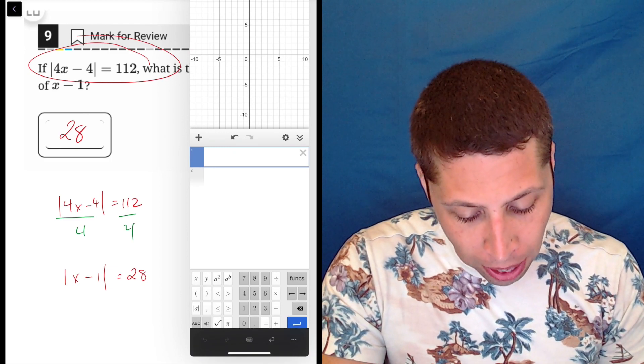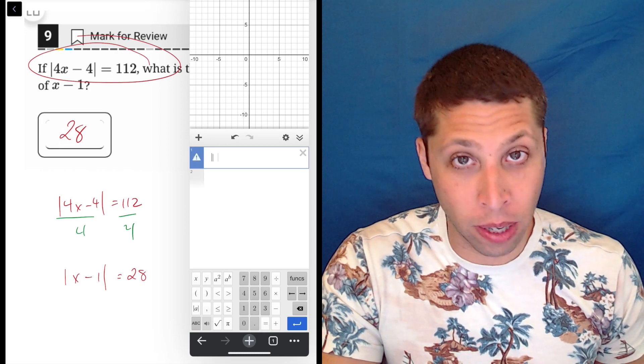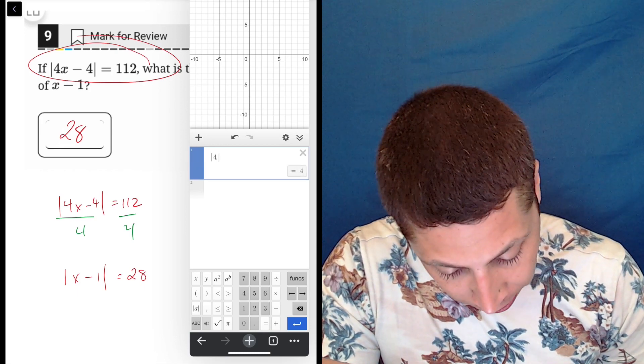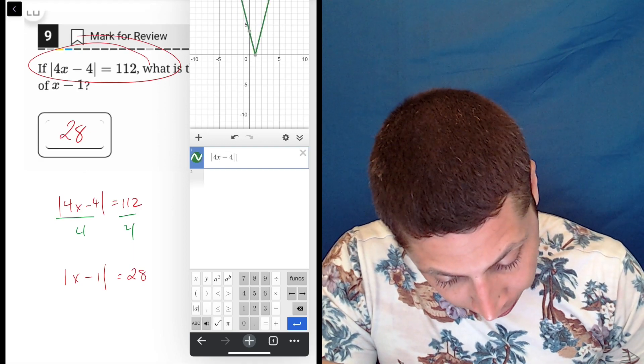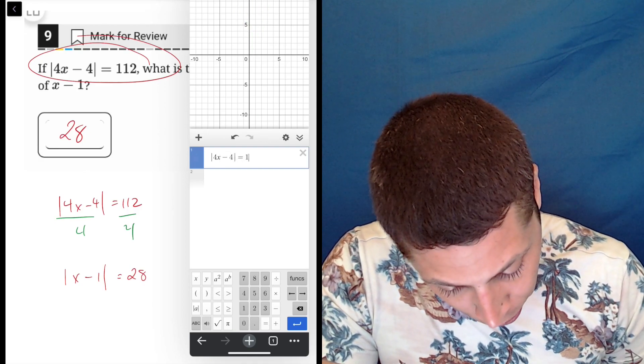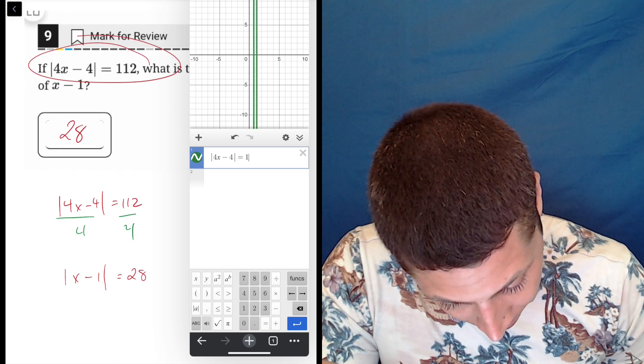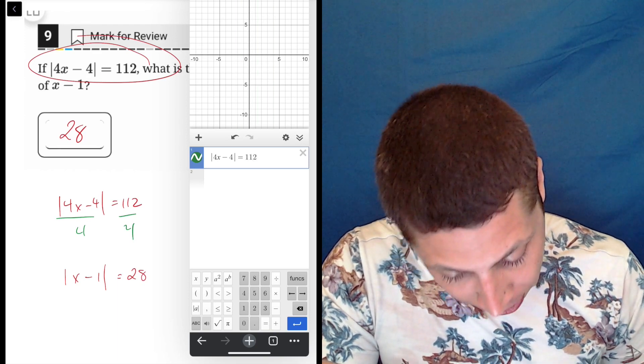Absolute value, it's right there in the bottom left, so you can enter that as well. The calculator's going to handle it fine. So 4x minus 4, absolute value, and then equals 112. This is one thing with this calculator is I think the buttons are too small.